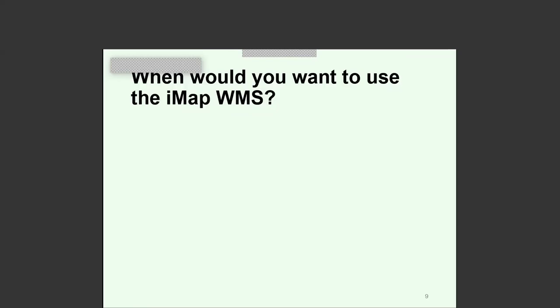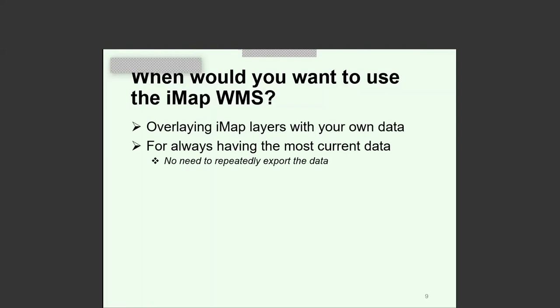When should you use IMAP web map services for your own maps? Probably the most powerful reason is when you want to overlay the data with existing data within your own organization or data not currently on IMAP — within desktop GIS software, ArcGIS Online, or a combination. Also, when you always want the most current data: the main advantage is you don't need to repeatedly perform an export of IMAP data, since the web map services always serve the most current data.